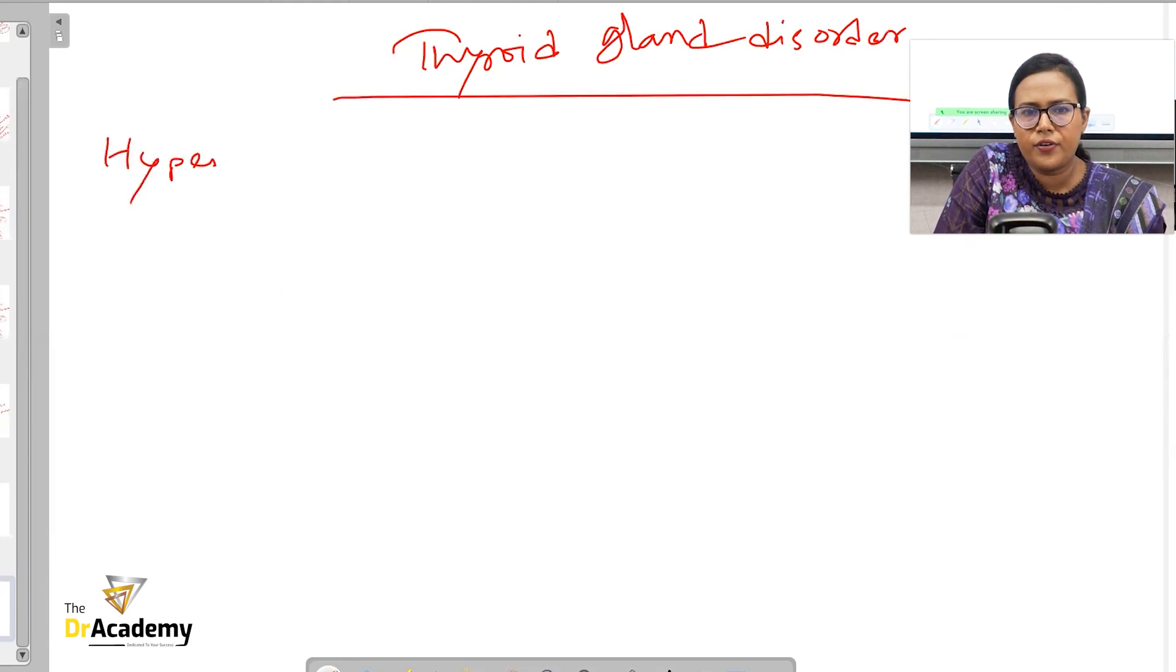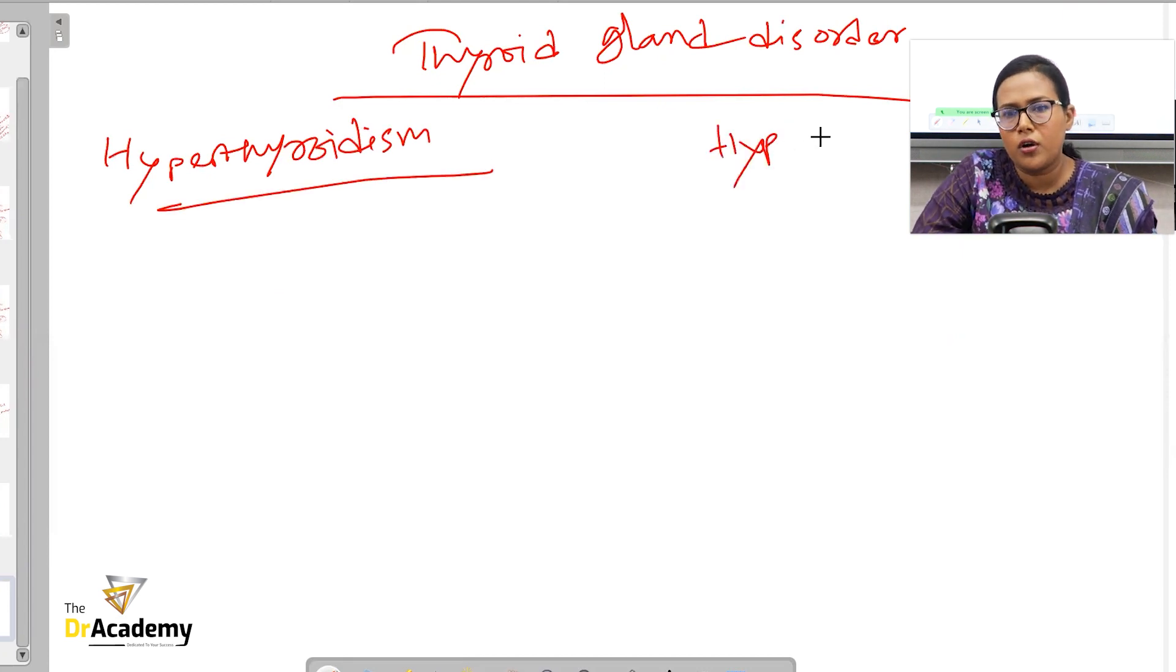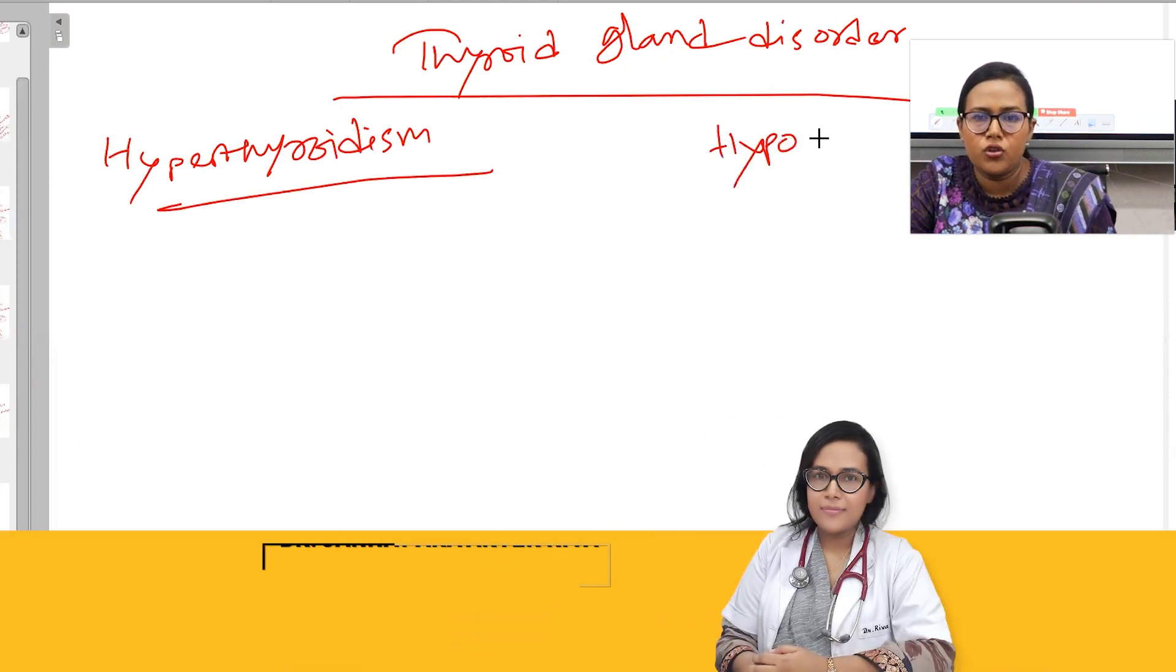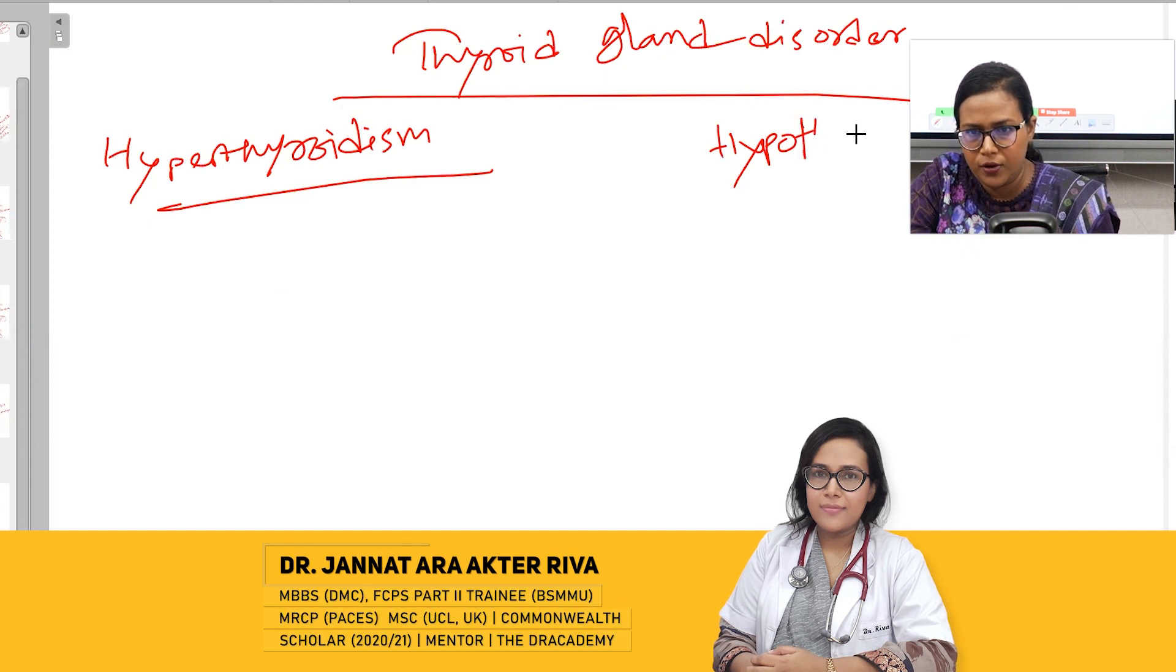We'll start with hyperthyroidism first. We'll discuss the features of hyper versus hypothyroidism first, and then we'll talk about the causes and each of the associations of hyperthyroidism.